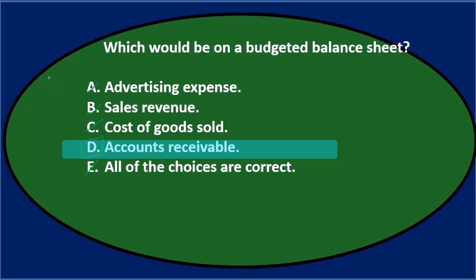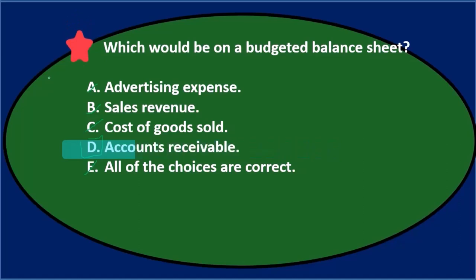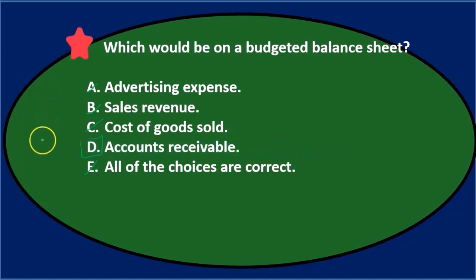It looks like D is our final answer. Final answer: which would be on a budgeted balance sheet? D. Accounts receivable.